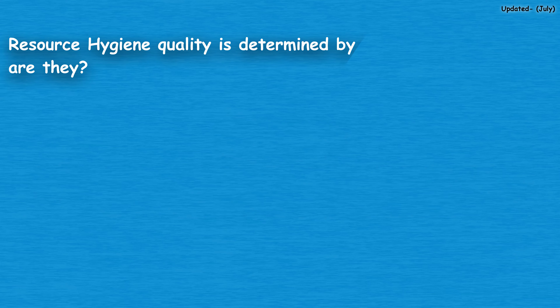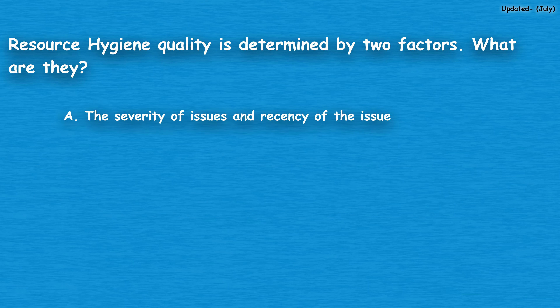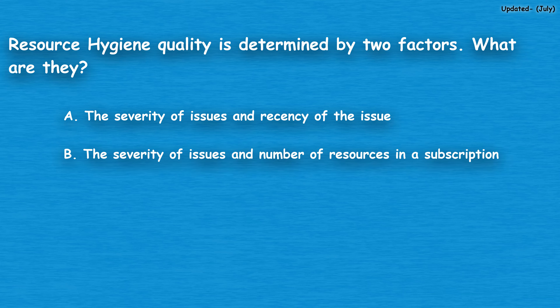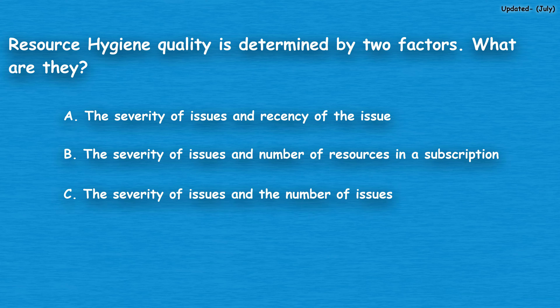The next question: resource hygiene quality is determined by two factors. What are they? Option A: the severity of issues and recency of the issue. Option B: the severity of issues and number of resources in a subscription. Option C: the severity of issues and the number of issues. Option D: the severity of issues only.